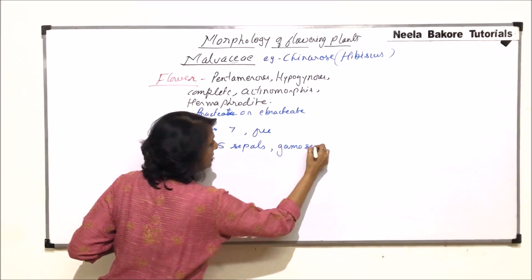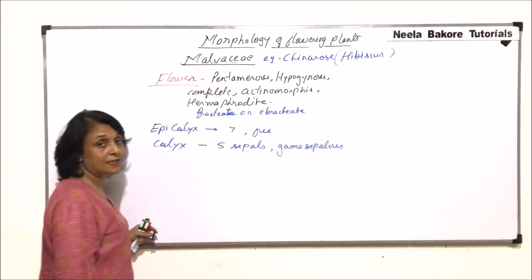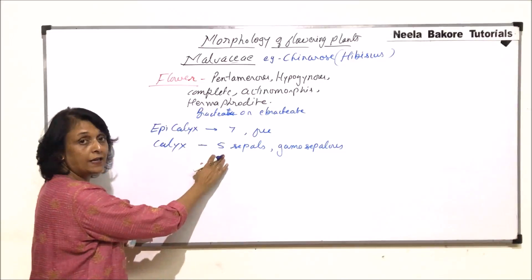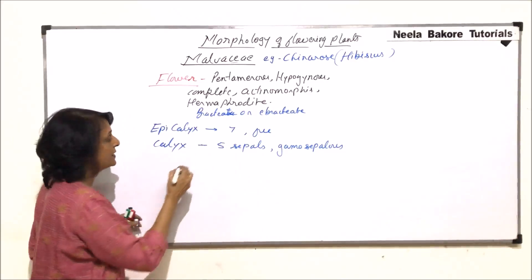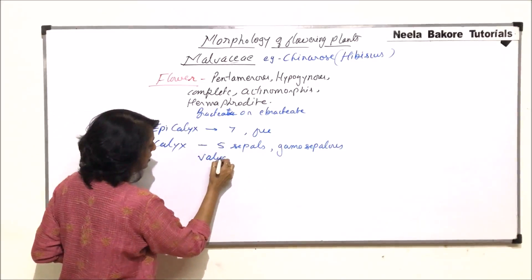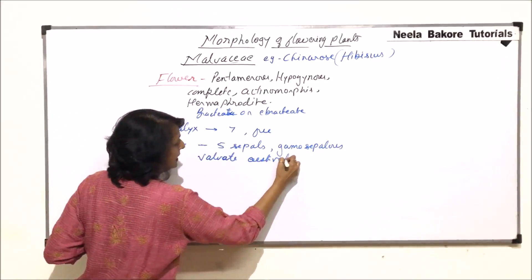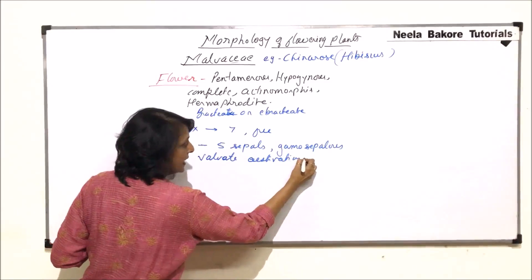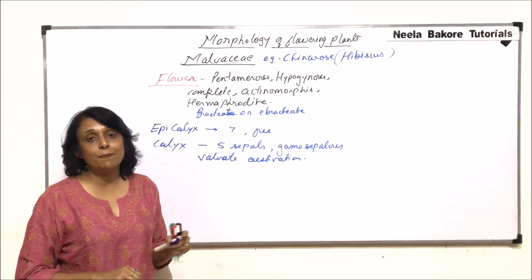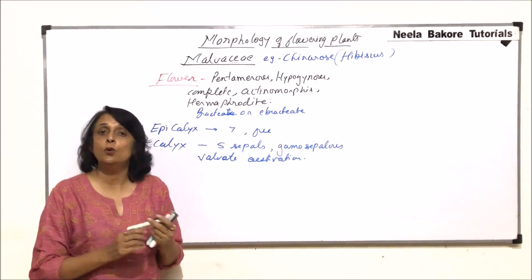The five sepals are gamosepalous, meaning the sepals are fused. The five sepals are gamosepalous with valvate aestivation, meaning the arrangement of these sepals is such that there is no overlapping — they just connect end to end.